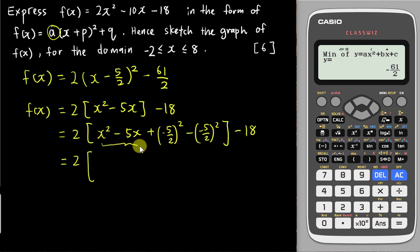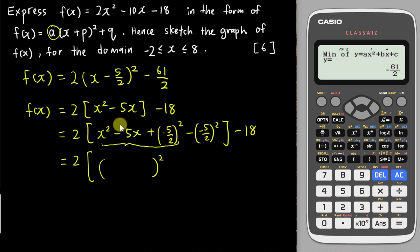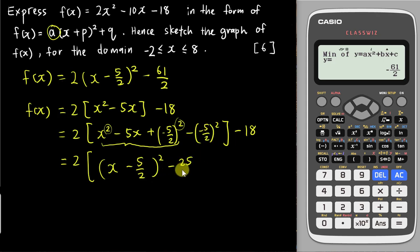Group the first three terms into bracket squared. The rule is simple: take the first term and third term without their squares and combine them. So you get (x - 5/2)² then calculate negative 25/4 minus 9 for the remaining terms outside.